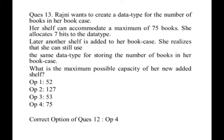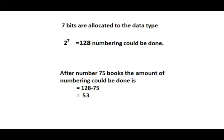This question came in AMCAT in 2015 and in 2016. Using 7 bits in total, we can have 128 numbering. 2 to the power 7 equals to 128. And out of those 128, 75 are already numbered. So the remaining numbering which could be done is 128 minus 75, which is equal to 53.